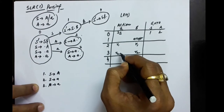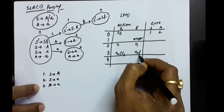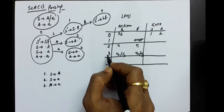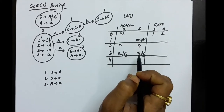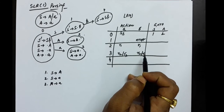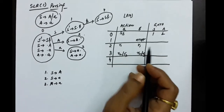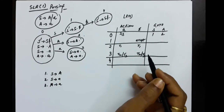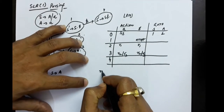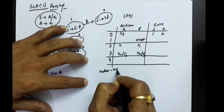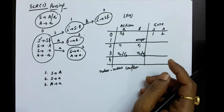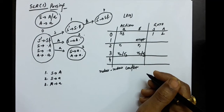A produces a dot is production three, so we write R3 in state three as well. Now in the same state — the same row — we are writing both R2 and R3. Whenever we do parsing we will be confused whether to follow R2 or R3. This means the table has a reduce-reduce conflict.